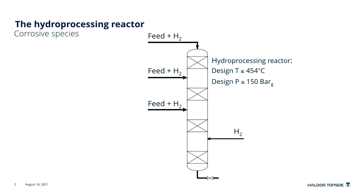My talk will focus on the hydrotreating reactor. It is designed for a temperature of 454 degrees C and it may have an assigned pressure up to 150 bar G. We have feed and hydrogen coming in at multiple beds.